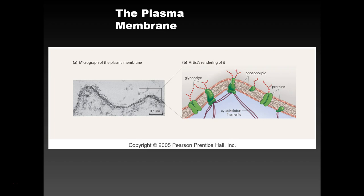The plasma membrane is more than just phospholipids — it's more than just a fatty layer separating the cell from the environment. There is a hydrophobic region in the middle and hydrophilic regions on the outside and inside, because both the inside and outside are watery. You're going to have lipids, cholesterol, and proteins stuck in here as well.